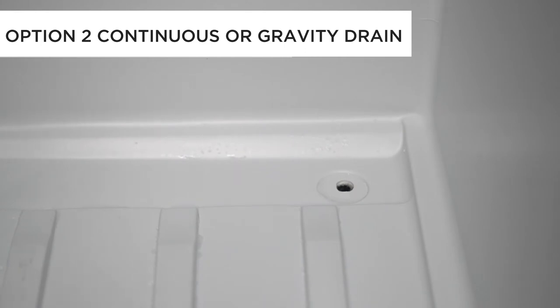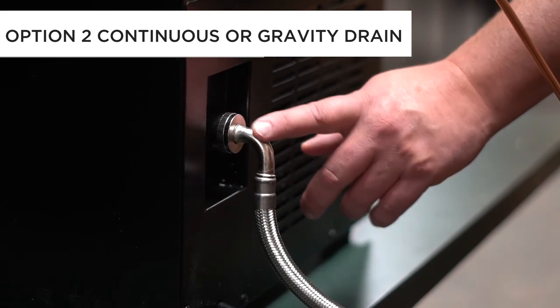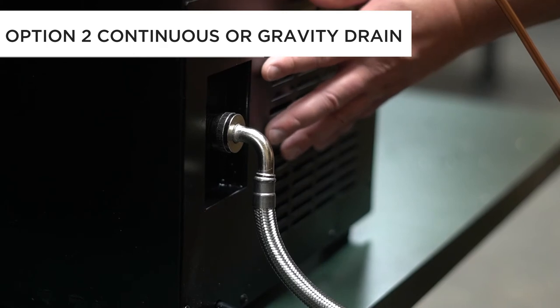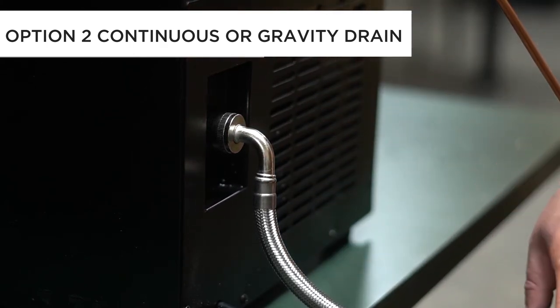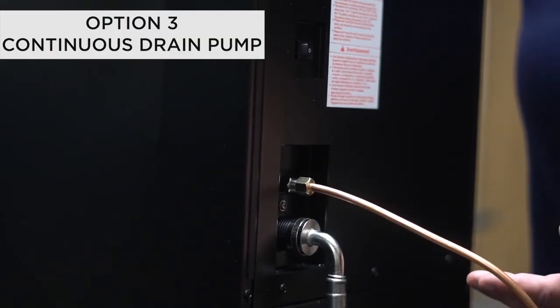In this configuration, we're using the continuous drain or the gravity-fed drain. The water that collects in the lower reservoir inside the cabinet drains out through this hose to a floor drain. The floor drain has to be in close proximity to the unit, and gravity will take care of it and it will just trickle out as needed.